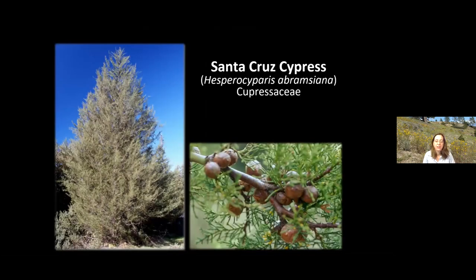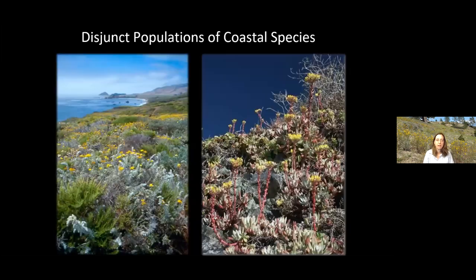Another species found in the Sandhills but not endemic to the Sandhills is Santa Cruz cypress. This is also found in only five locations in the entire world, one of which is in the Sandhills up in Bonny Doon. If you have a chance to check out the ecological reserve, I would definitely recommend that. In addition to the endemic species, the Sandhills have what we call disjunct populations of coastal species — species primarily found immediately along the coast in coastal strand, like coastal scrub and coastal dune scrub communities, that also occur in the Sandhills.